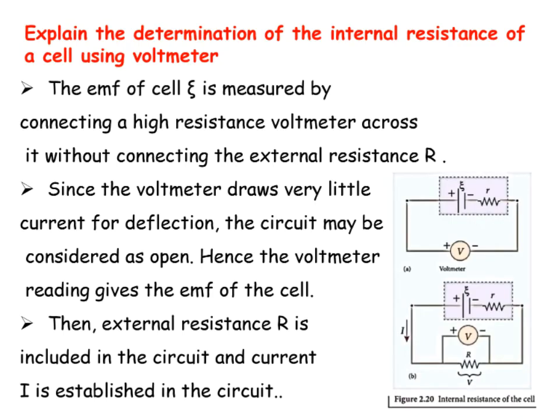Let's start the question. The electromotive force of the cell is denoted as psi (ψ). Psi is measured by connecting a high-resistance voltmeter across the cell without connecting any external resistance R.